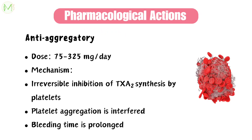The dosage needed for anti-aggregatory action is 75–325mg per day. It does this by irreversibly inhibiting thromboxane A2 synthesis by platelets. Thereby, platelet aggregation is interfered with and bleeding time is prolonged.